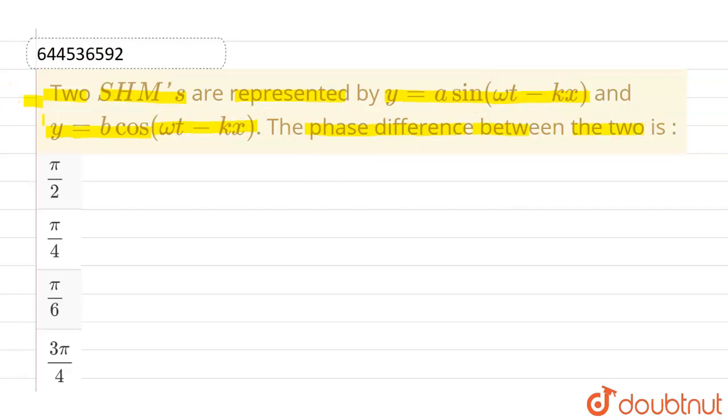So let's say the first equation is given as y1 which is nothing but a sin omega t minus kx, and the second equation, let's say this is y2 which is given as b cos omega t minus kx.